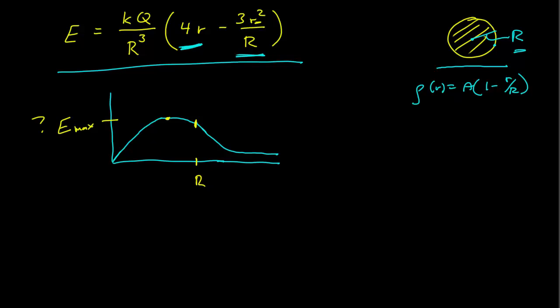First of all, I'm not sure we know exactly that the maximum is at a value less than the radius. But let's for the moment assume that it is, and then if we do a calculation and find that it's greater than the radius, then our picture of what's happening is wrong. But let's assume that the maximum electric field is, in fact, inside this region of charge.